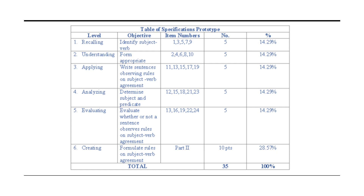There are tables of specifications which focus on content, where you specify the level of the domain instead of having all the levels outlined here. I will show you an example of that in the next videos.